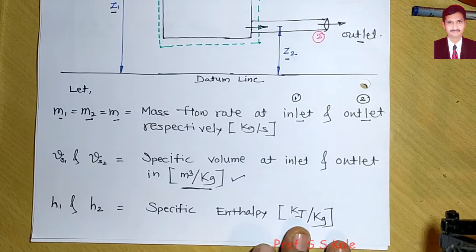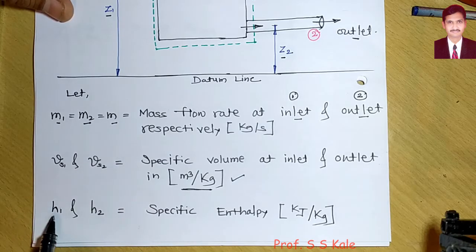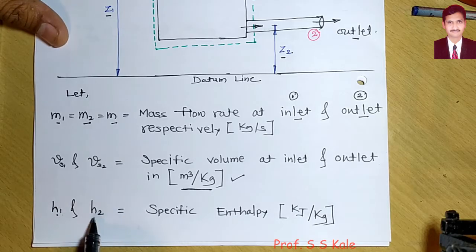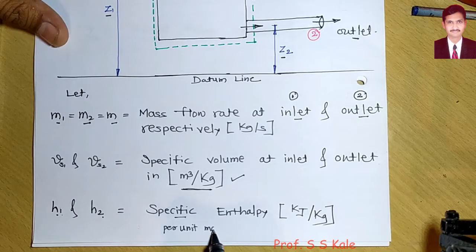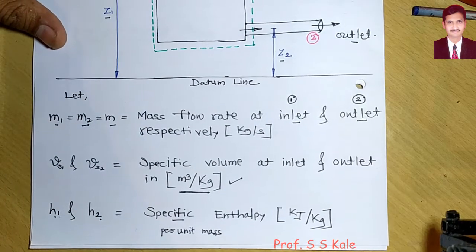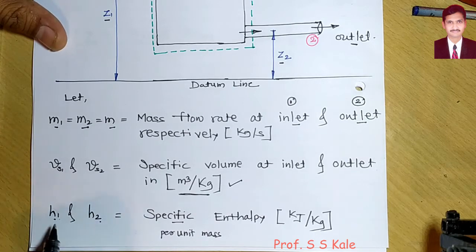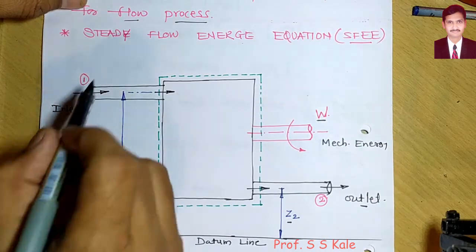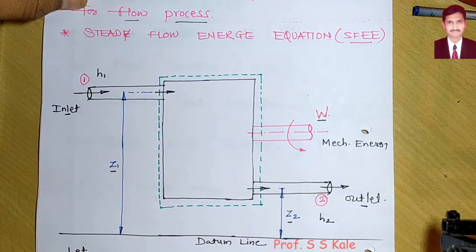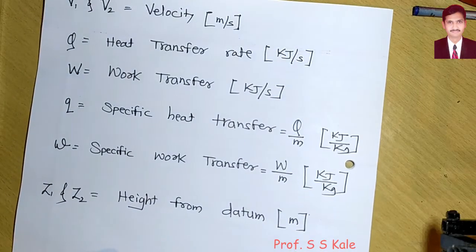Next is specific enthalpy. Total enthalpy is capital H and specific enthalpy is small h. h1 is specific enthalpy at inlet and h2 at outlet. Since it is specific, the unit is kJ/kg.